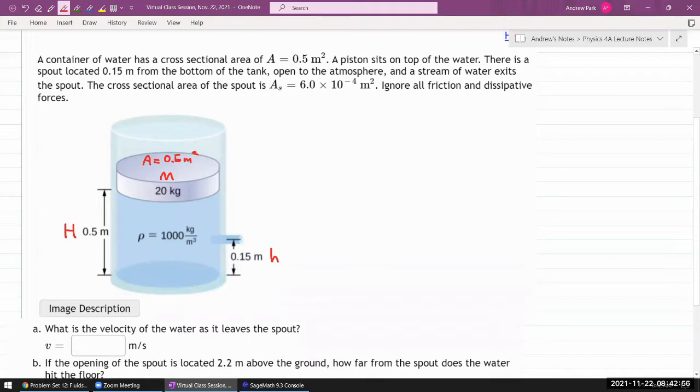And they are giving us cross-sectional area of the spout as well. Okay, so this is a cross-sectional area. There is a spout open to the atmosphere and a stream of water exits the spout.